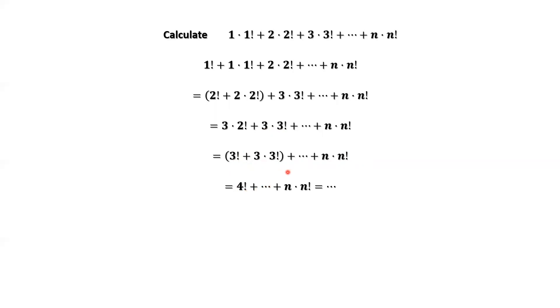Repeat the same procedure. We will have n factorial plus n times n factorial. Totally we have n plus 1 times n factorial.